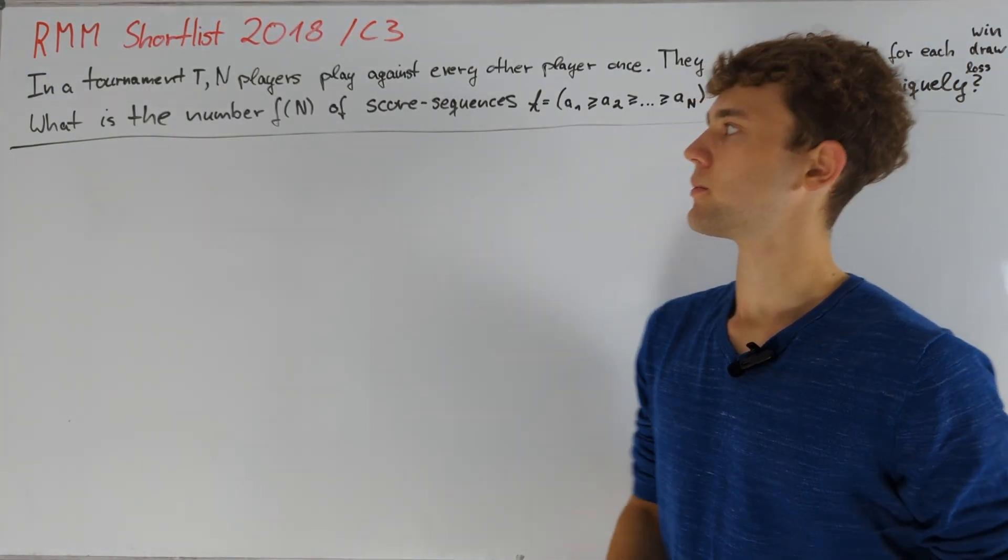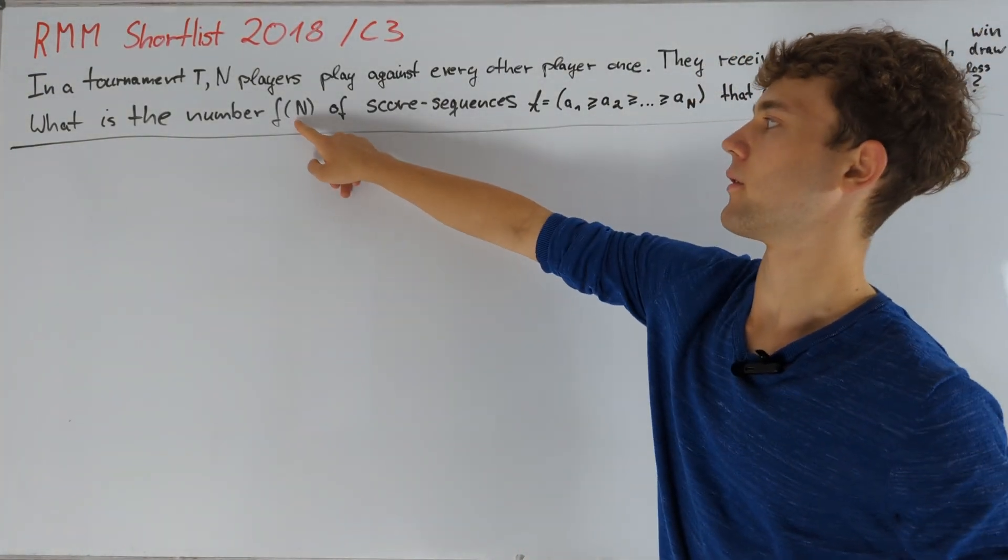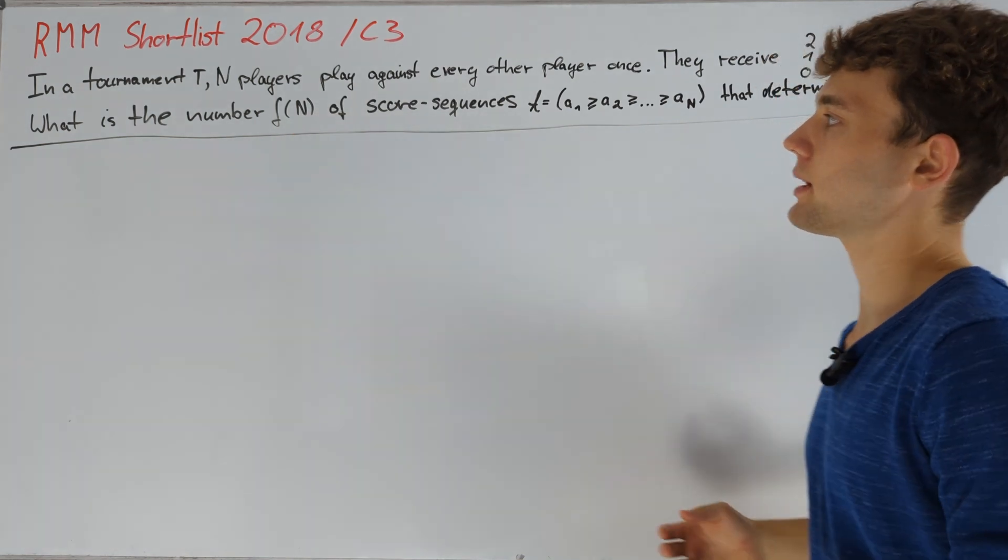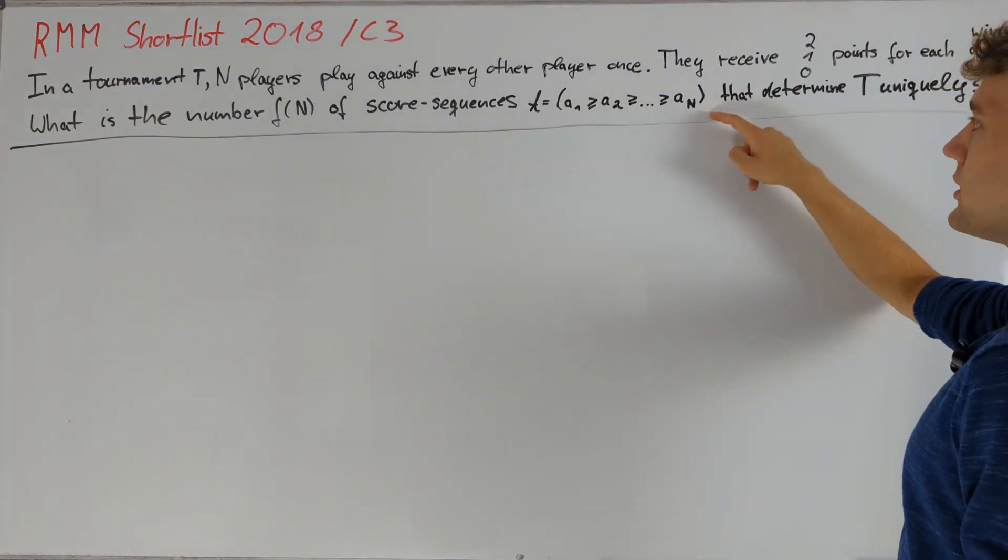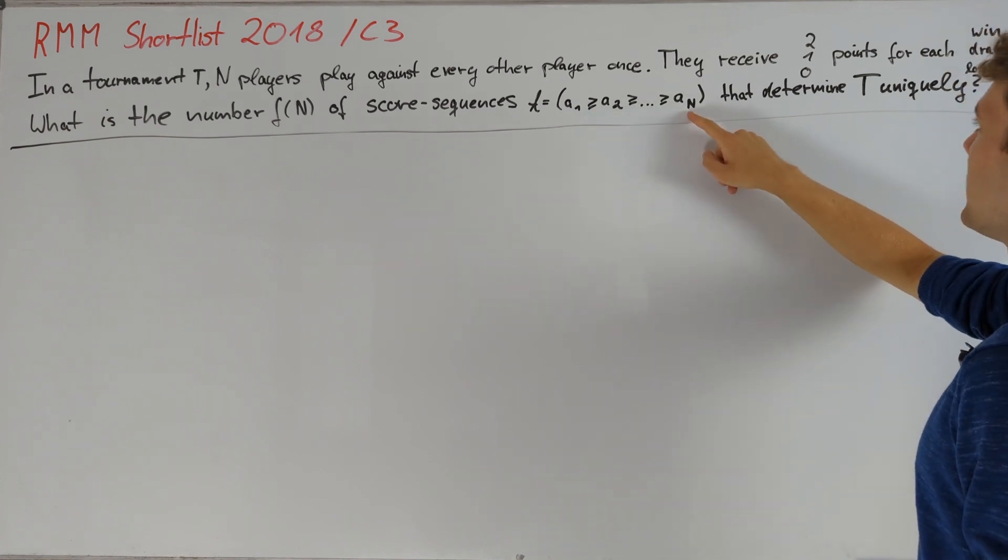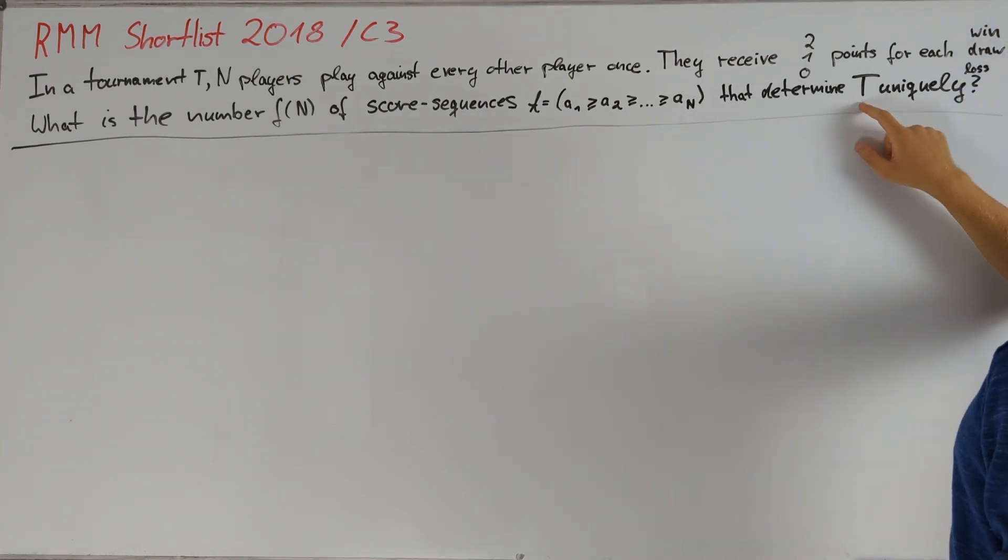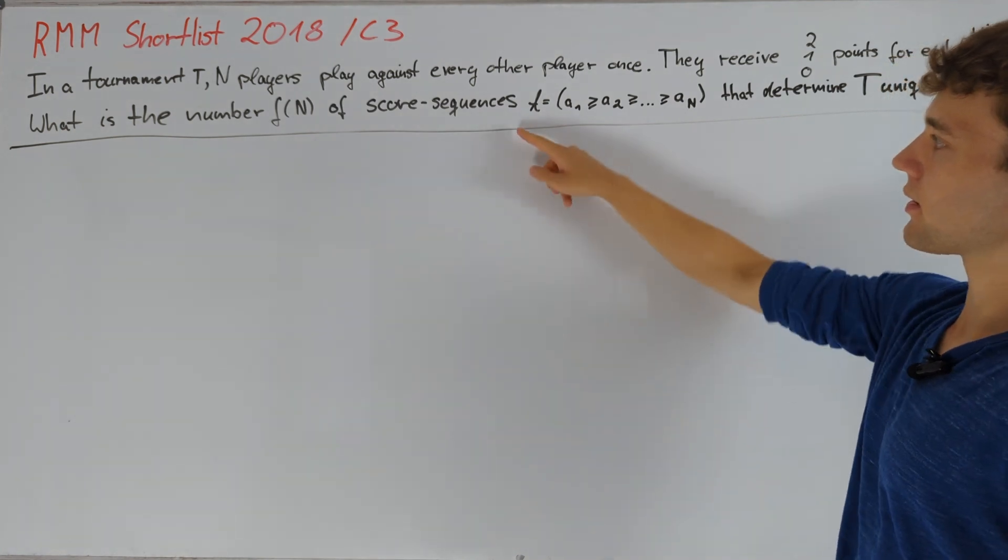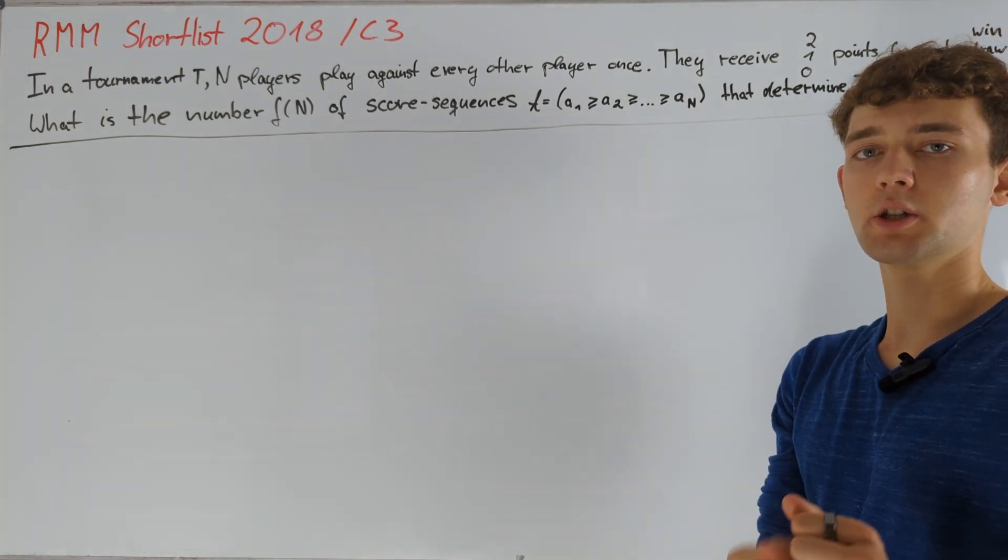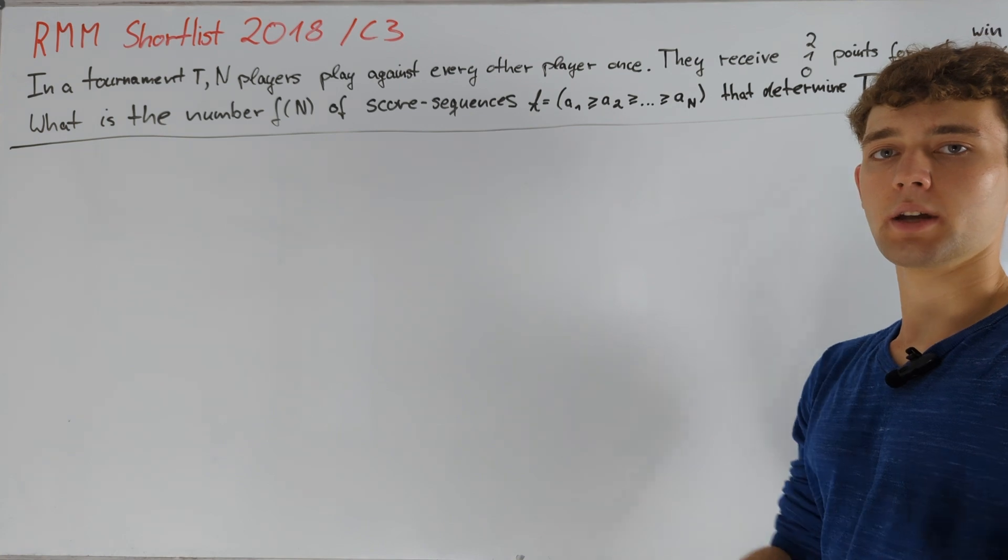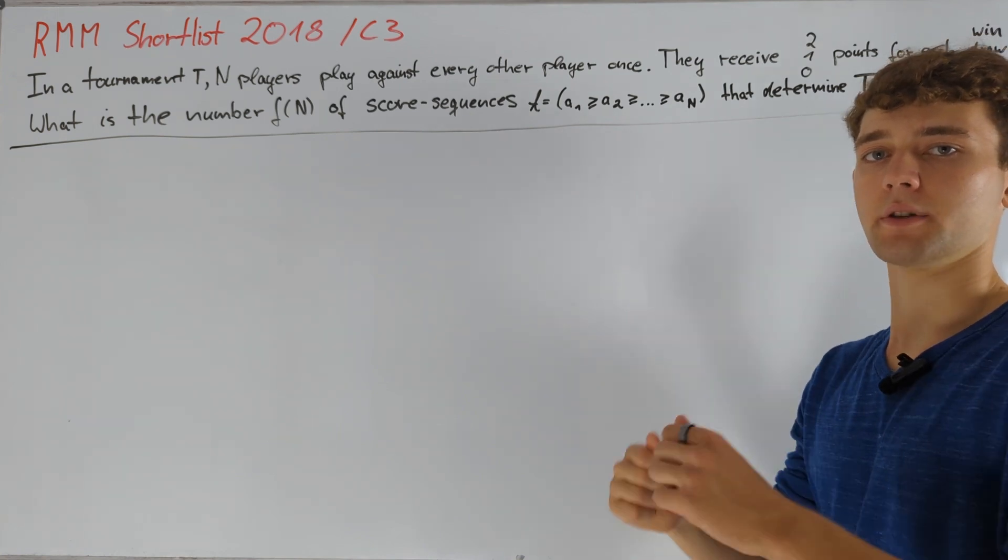And the question is what is the number f(n), so in terms of the total number of players, of score sequences ordered in decreasing order a1, a2 up to an that determine T uniquely. We mean by that that knowing the score sequence a together with the knowledge of which player got which score, we can tell the outcome of every single game.